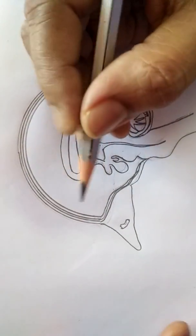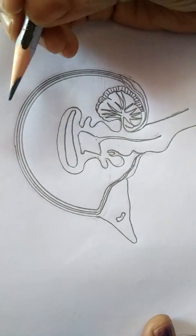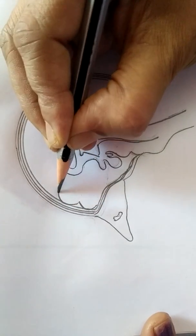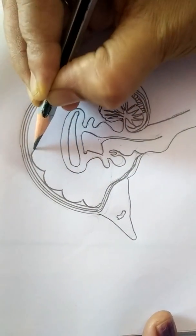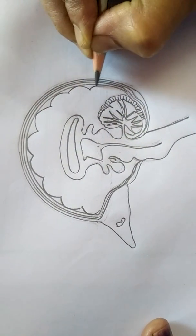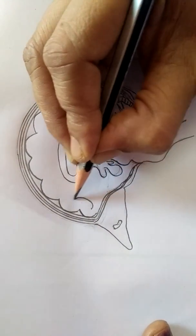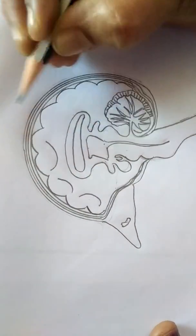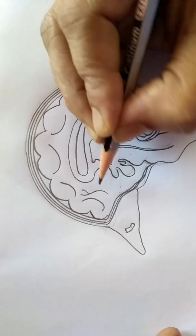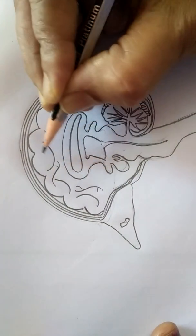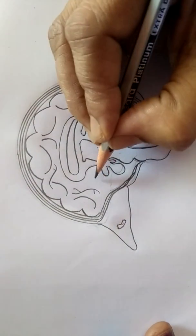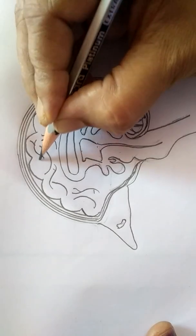Now you have to draw gyri and sulci foldings here, to draw depressions and elevations. So for this, you can draw this in any way, okay, but there is no specific method for this. See that here and there Y-shaped structures and reverse C. Let us see. And then here and there Y-shaped structures.